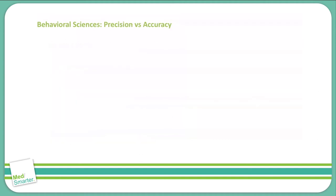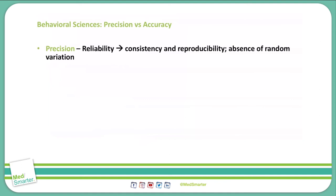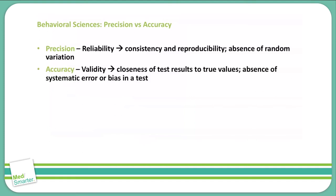Finally, let's discuss precision and accuracy. Precision is also known as reliability — we need consistent and reproducible results without random variations; it's how reliable or precise a measurement is. Accuracy, however, is more about validity — it's how close our test results are to the actual true values. We don't have systematic error or bias in an accurate test, because error or bias will decrease our accuracy.